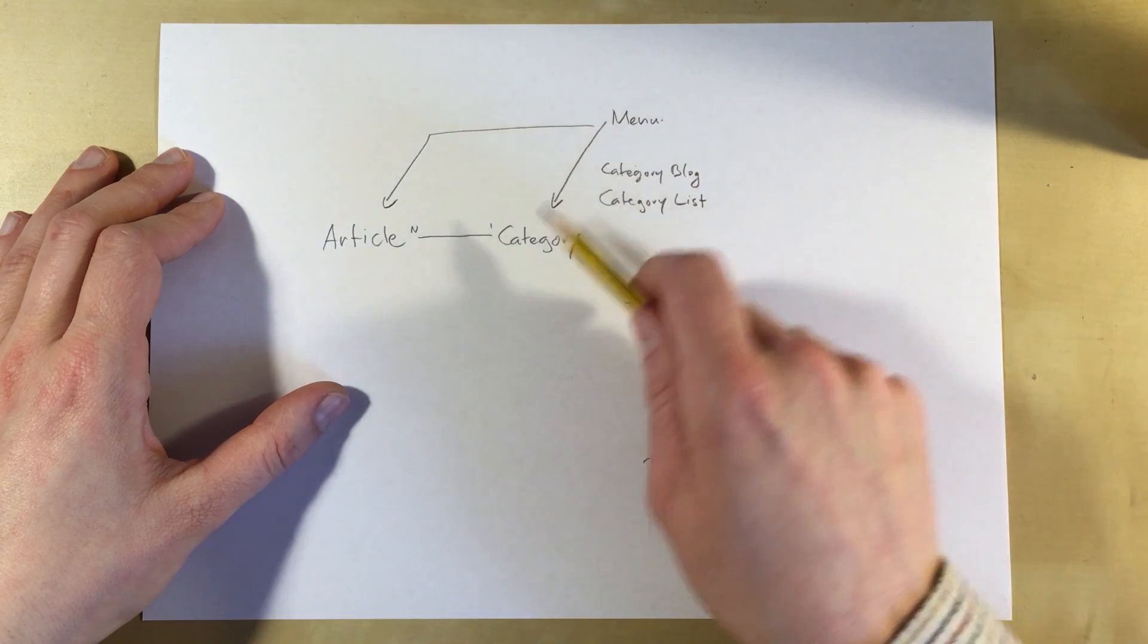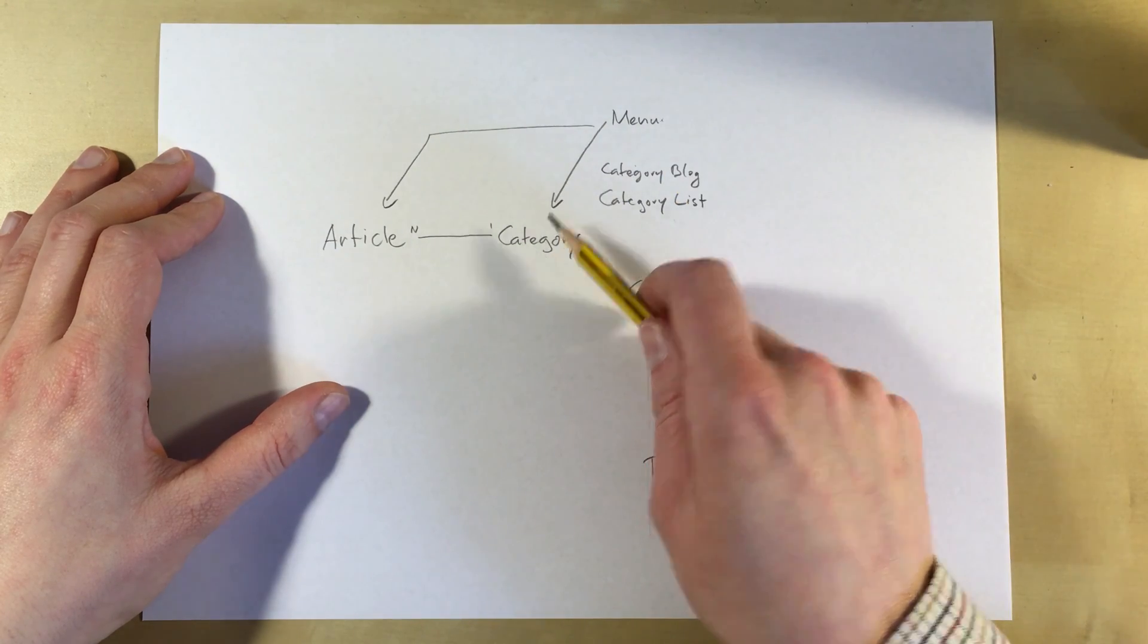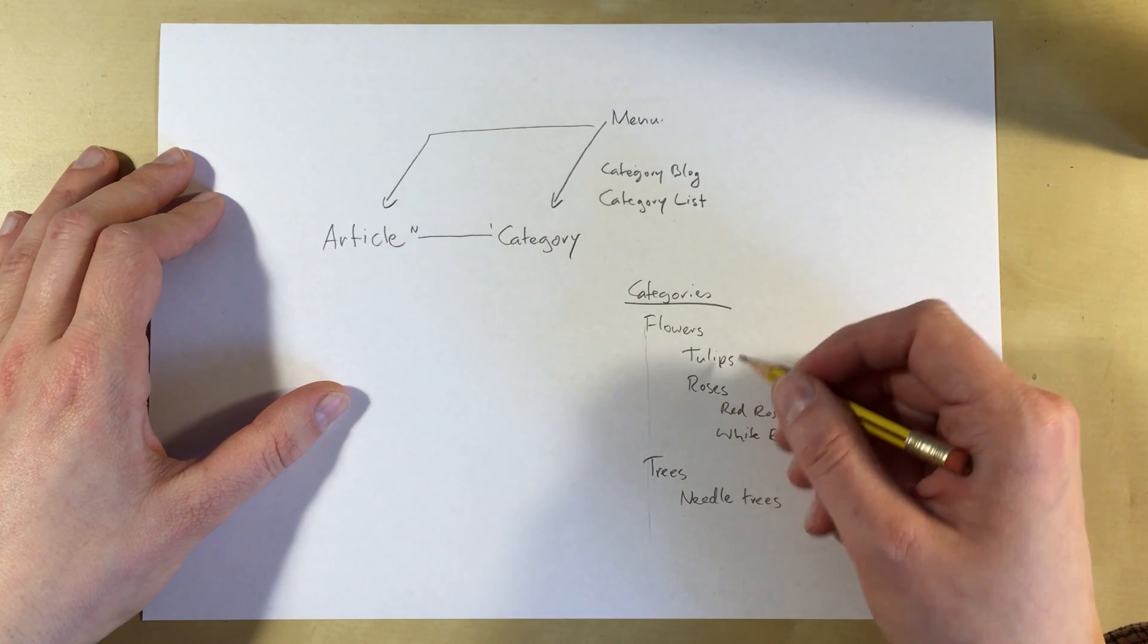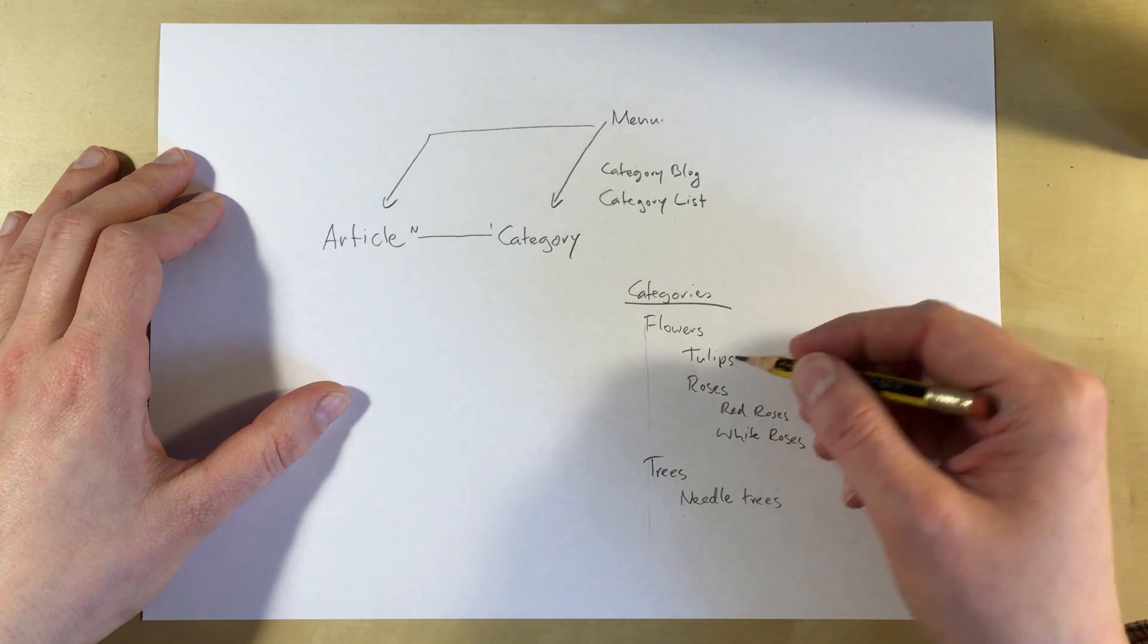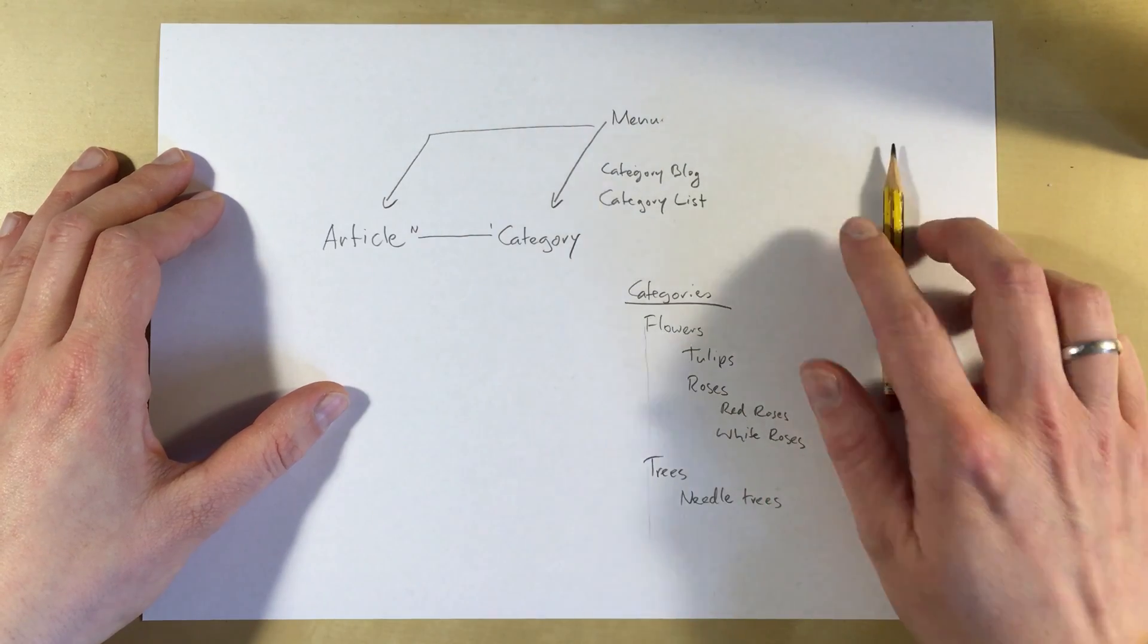But the categories you create don't have to be directly linked to the menus. Your menu structure can be very independent of your category structure. So just because you have tulips and roses as a category doesn't mean that you need menus that link to those different categories. You can if you want to, but you don't have to.